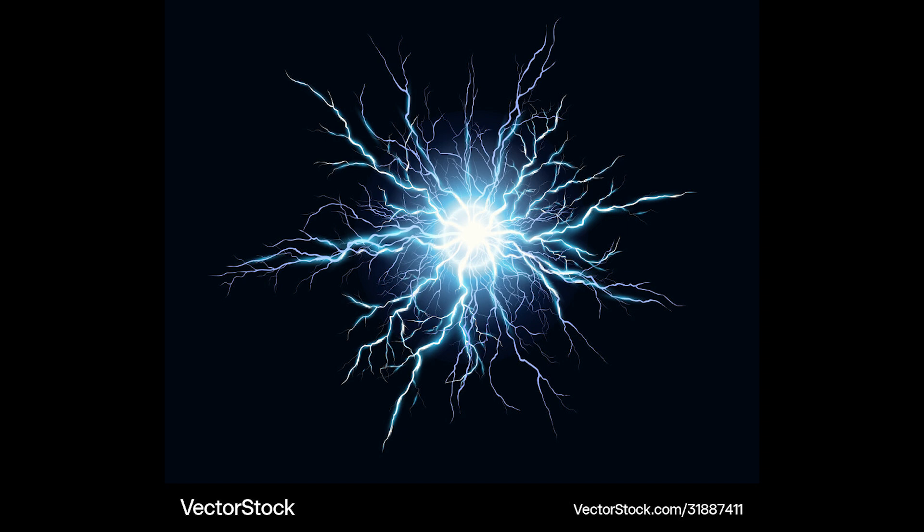The exact mechanisms behind the formation of ball lightning are still a subject of scientific debate with various theories proposed to explain its origins. One hypothesis suggests that ball lightning is created by the combustion of gases released during thunderstorms, while another theory posits that it's the result of electromagnetic phenomena such as plasma discharge or ionization of the air.